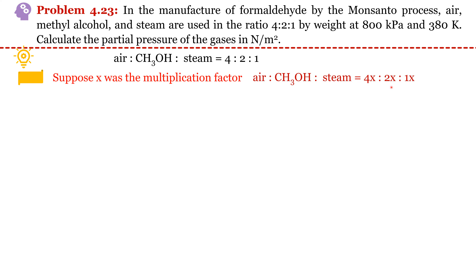Now we can estimate the number of moles of individual components. Number of moles equals weight divided by molecular weight. Weight of air is 4x and its molecular weight is 29. Similarly we estimate the moles of methyl alcohol and steam. As per Dalton's law, partial pressure of air divided by total pressure equals moles of air divided by total moles. So 4x/29 is the moles of air, and total moles is the sum of moles of air, methyl alcohol, and steam.